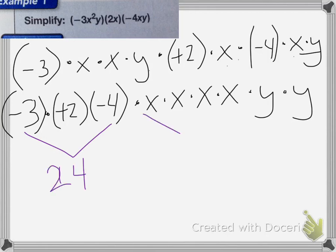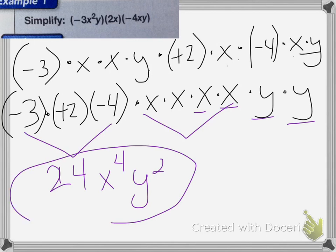I have 4 x's here that are multiplied together, so that's going to equal x to the fourth power because I'm multiplying them. So x times x would be x squared times x would be x cubed times x would be x to the fourth power. Then I have y and I have y times y would be y squared. So this is my simplified answer.